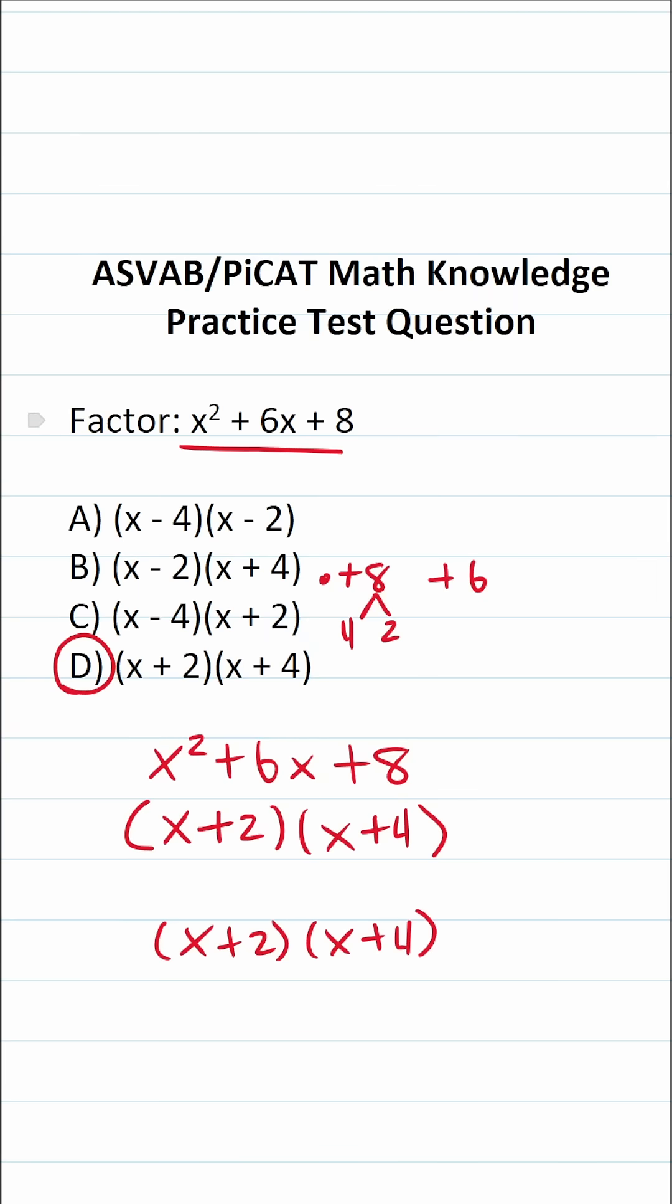you get the thing you were asked to factor, you know you have the right answer. So let's go ahead and do that just to check our work very quickly. We're going to take x and multiply here and here, and we're going to take two and multiply here and here.